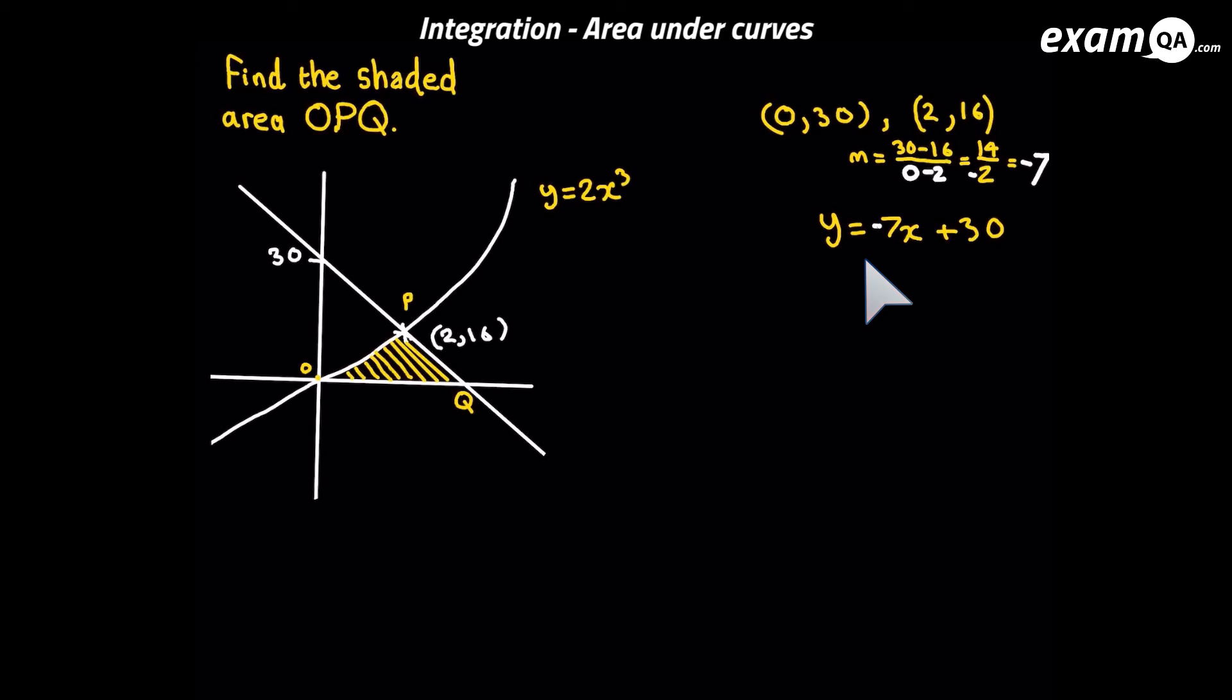Now I'm going to work out q. Where is q? It's on the x-axis. So we know q's y-coordinate. The y-coordinate of q is 0. So we put y equals 0 and that allows us to solve the x-coordinate of q. Put y equals 0 here and we'll simply solve this. We get x is 30 over 7. So we can put that as the q-coordinate.